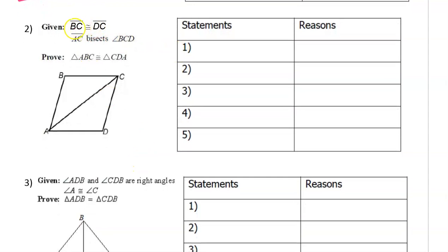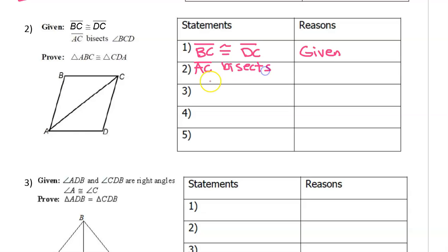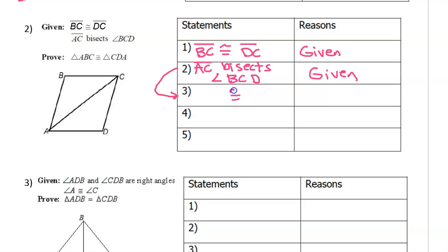Let's do a few more proofs. Let's start with the given: BC is congruent to DC. So let's go ahead and write that down — segment BC is congruent to segment DC, and the reason is given. Next, we have segment AC bisects angle BCD — that is also given. This given says AC bisects angle BCD, which is not a congruence statement we can use directly. We need to take this statement and turn it into something is congruent to something else.